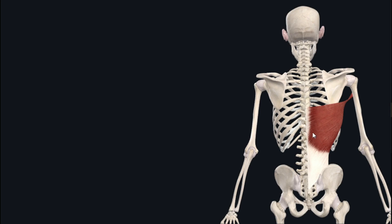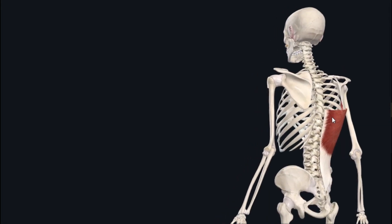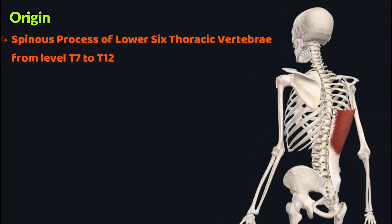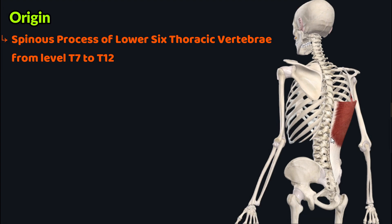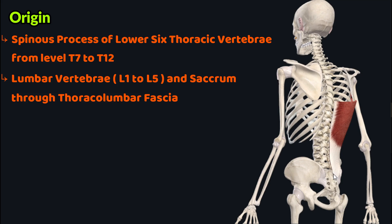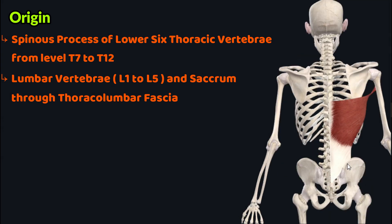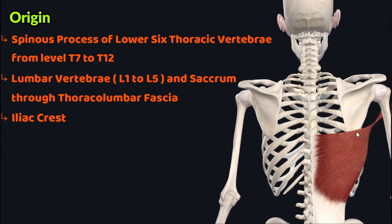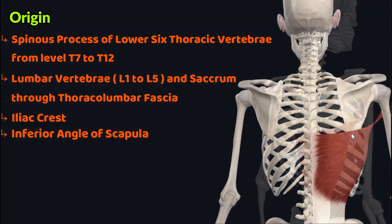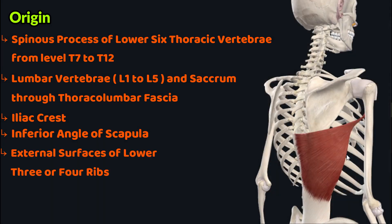The latissimus dorsi muscle has a wide range of origin. It originates from the spinous processes of the lower six thoracic vertebrae, from level T7 to T12. It also originates from the lumbar vertebrae and sacrum through the thoracolumbar fascia, from the iliac crest, the inferior angle of the scapula, and the external surfaces of the lower three or four ribs.